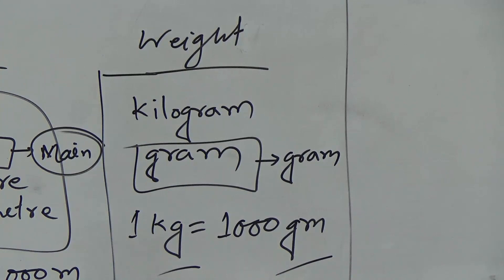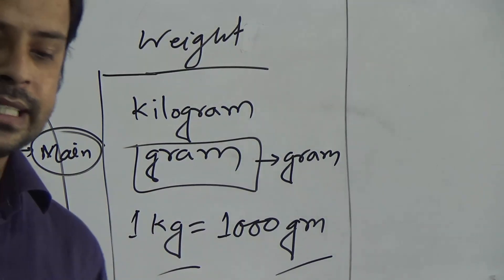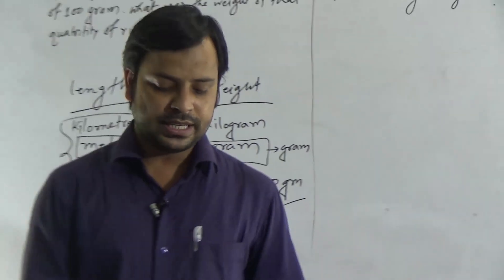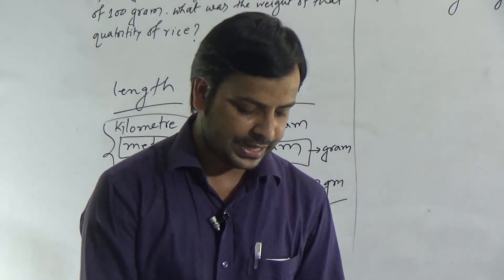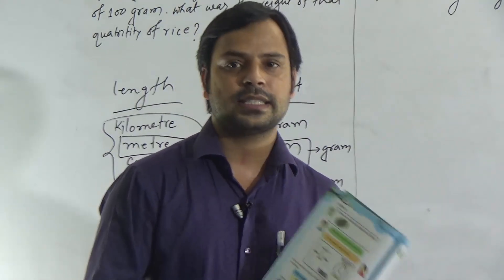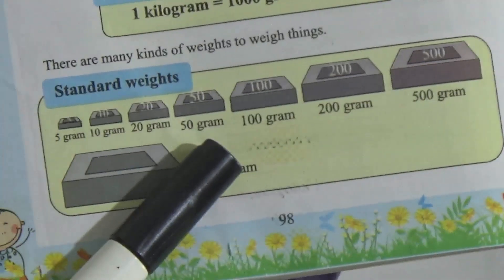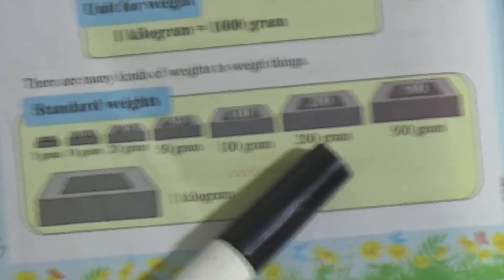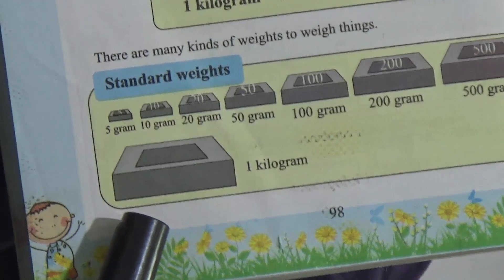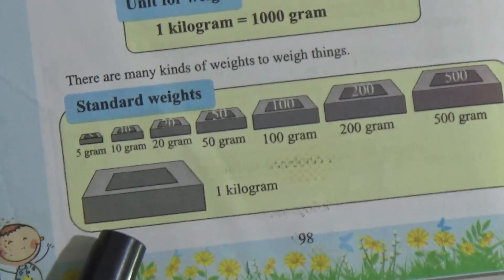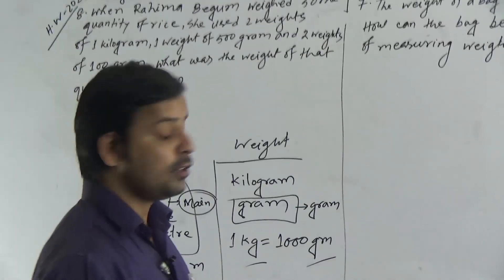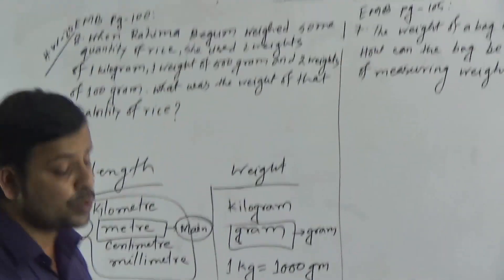To weigh different types of items, we use different weights. The standard weights used in our country are: 5 gram, 10 gram, 20 gram, 50 gram, 100 gram, 200 gram, 500 gram, and 1,000 gram which equals 1 kilogram. These are the standard weights given in your book. Depending on this information, I will solve these two word problems.